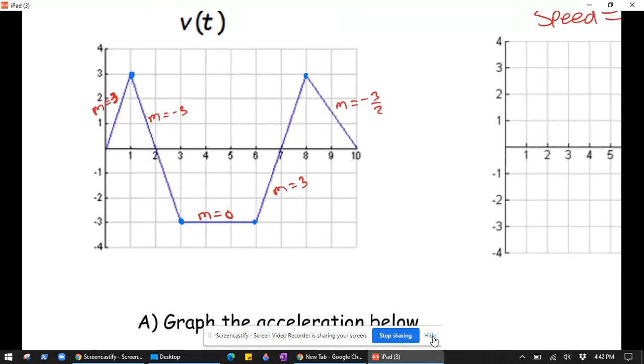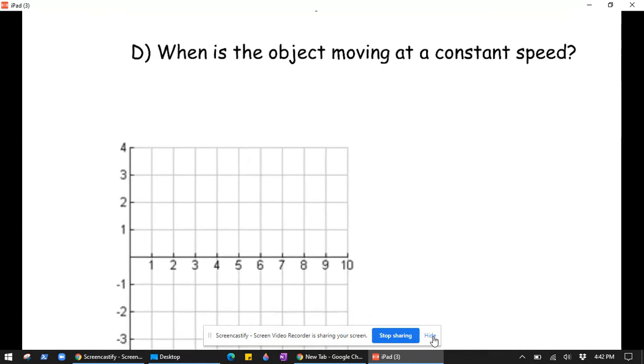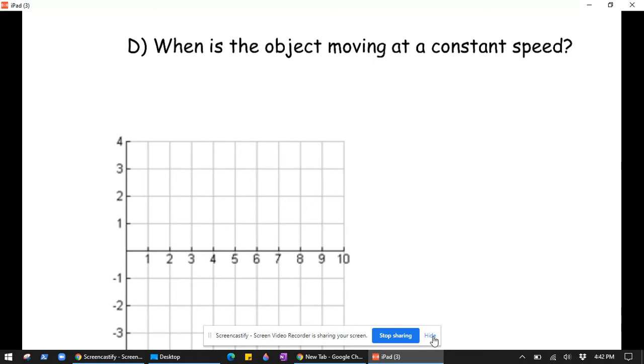So we're going to graph a slope of 3, negative 3, and 0. So from 0 to 1, my slope is 3. And I'm going to graph a slope of 3, and I'm going to put an open circle there because it's not differentiable.